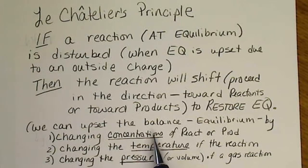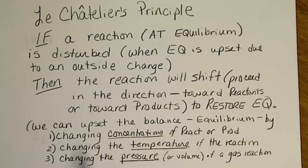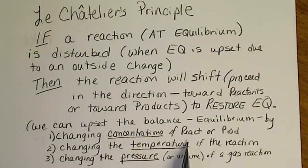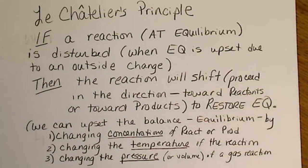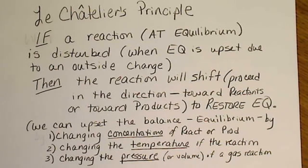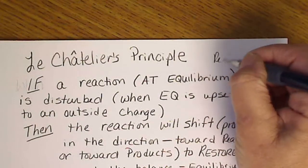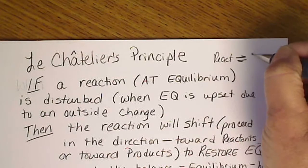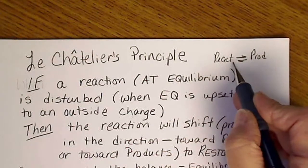We can upset equilibrium — I think about equilibrium as a balance — and we can do that in a couple of ways: by either changing the concentrations of reactants or products, or we could change the temperature of a reaction, because temperature definitely affects the equilibrium constant, or we could change the pressure by changing the volume, especially if we have a gas reaction. At equilibrium, reactants form products at the same rate that products form reactants.